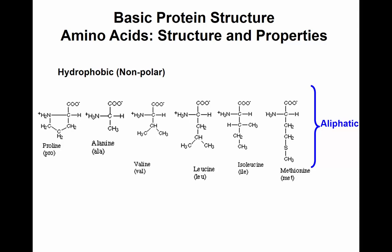The other set of amino acids that are non-polar are called the aliphatic group. Aliphatic means the R group does not have a ring structure.